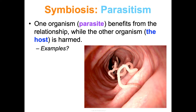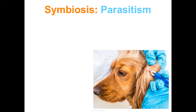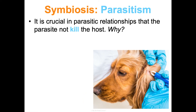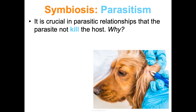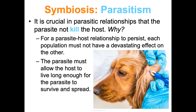An example of parasitism is tapeworms in human intestines — the human is harmed and the tapeworm benefits. One key factor is that the parasite does not actually kill the host, because for this relationship to be long-term, each population can't have a devastating effect on the other. The parasite wants to keep the host alive long enough to go find another host as needed.